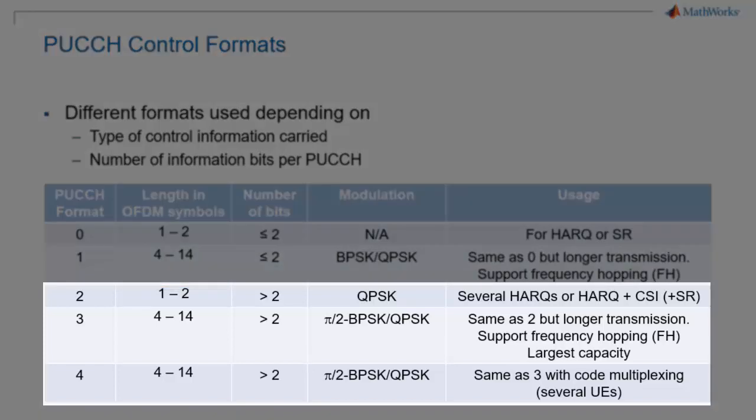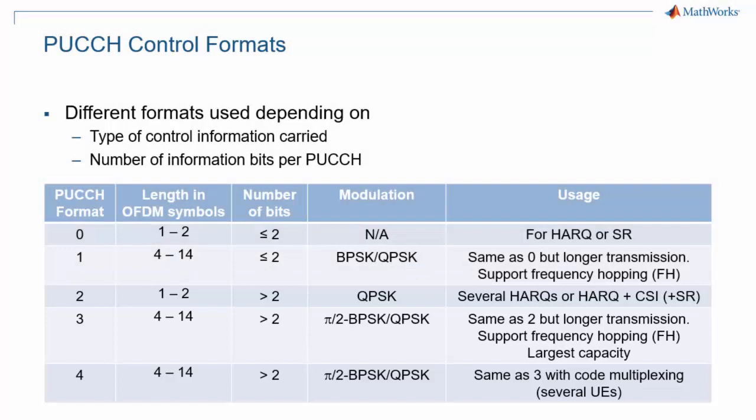Payloads greater than 2 bits use format 2 or the longer alternatives format 3 or format 4. These formats support longer payloads such as CQI, multiple HARQs, or a combination of different payloads. Note that UCI payloads can vastly exceed 100 bits when detailed CQI reports are included.